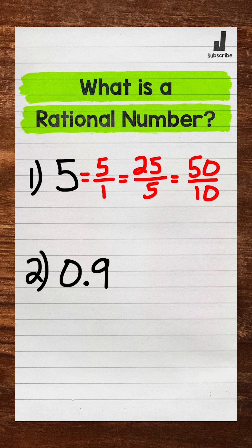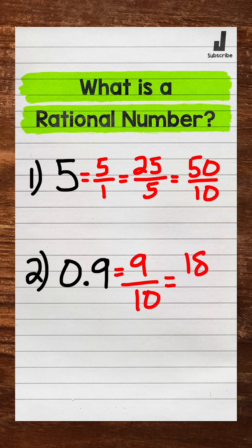For number two, we have 0.9. This is a terminating decimal, so right away we can see that this is rational, but let's write it as a fraction of two integers. We can write this as 9 over 10, 18 over 20, and so on.